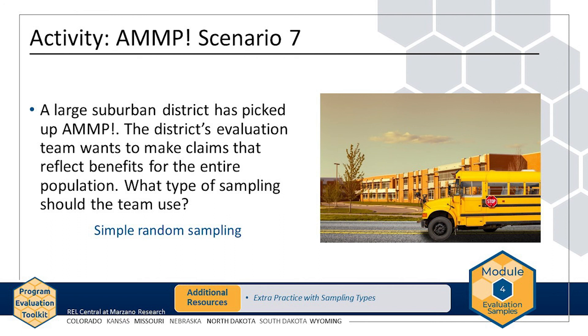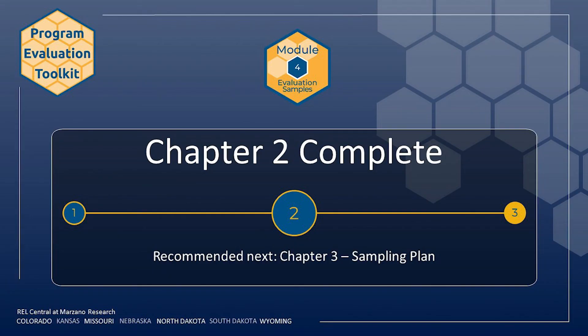If you would like additional opportunities to practice using the sampling types, see the Extra Practice with Sampling Types handout available on the Resources page of the website. This activity will take approximately 20 minutes. Although the previous AMP scenarios relate to selecting individuals to interview, you could use the same techniques to select a sample for a survey, assessment, focus group, or another data collection method. This completes Chapter 2. Next, in Chapter 3, you will apply what you have learned and create a draft sampling plan for your evaluation.